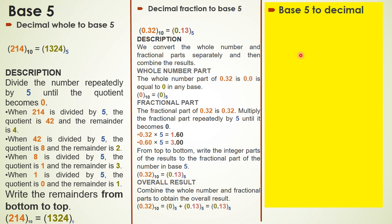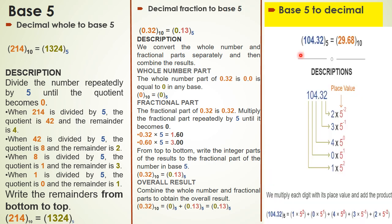If I want to convert a base 5 number into decimal, I will again use the method of weights. 104: the 4 has a weight of 0, 0 has a weight of 1, 1 has a weight of 2, 3 has a weight of minus 1, 2 has a weight of minus 2. You can see I multiply each number with its weight and I got my final result 29.68.